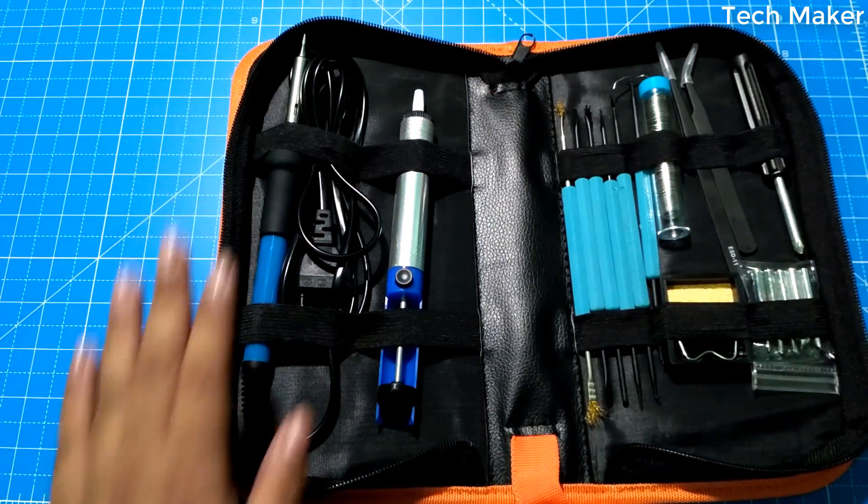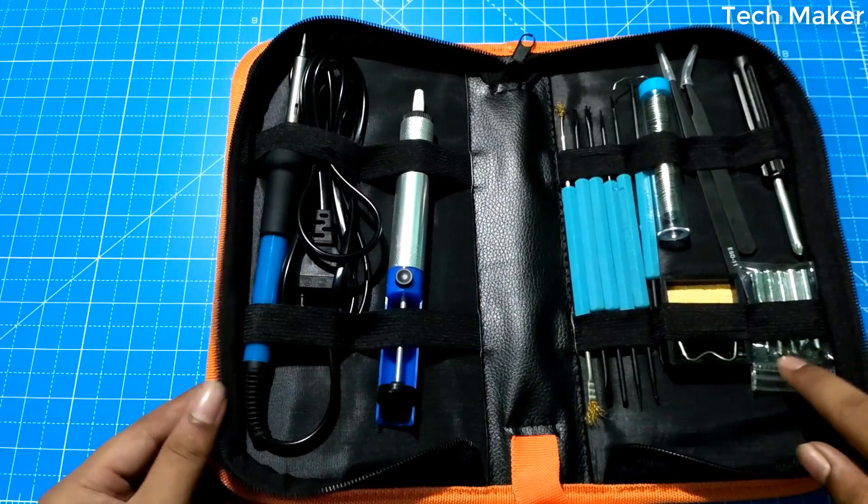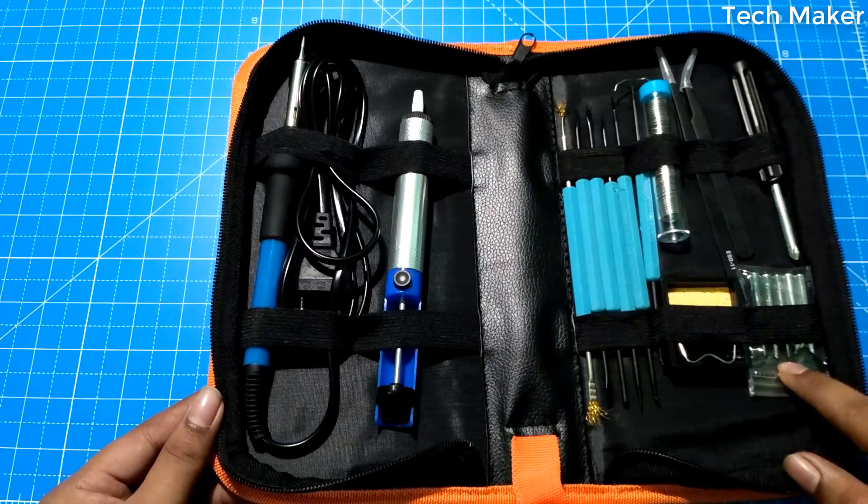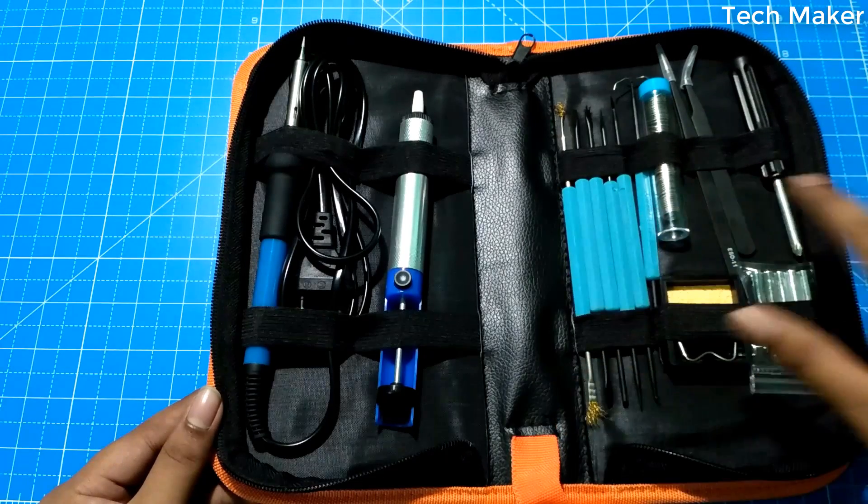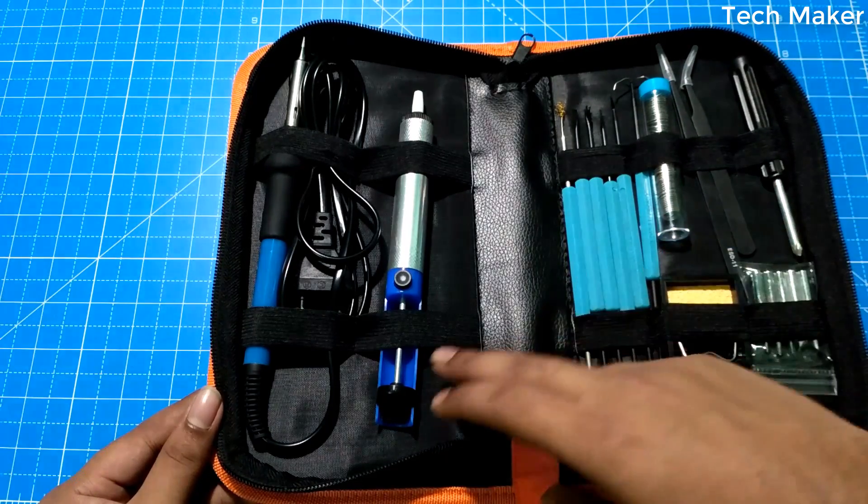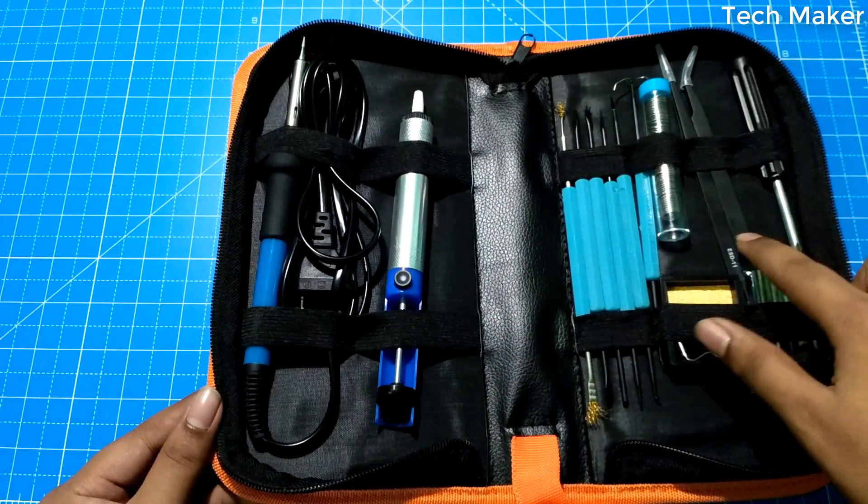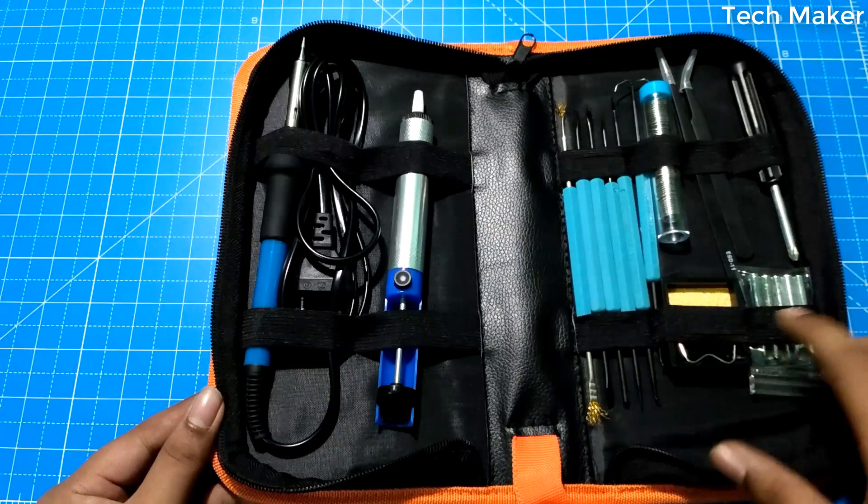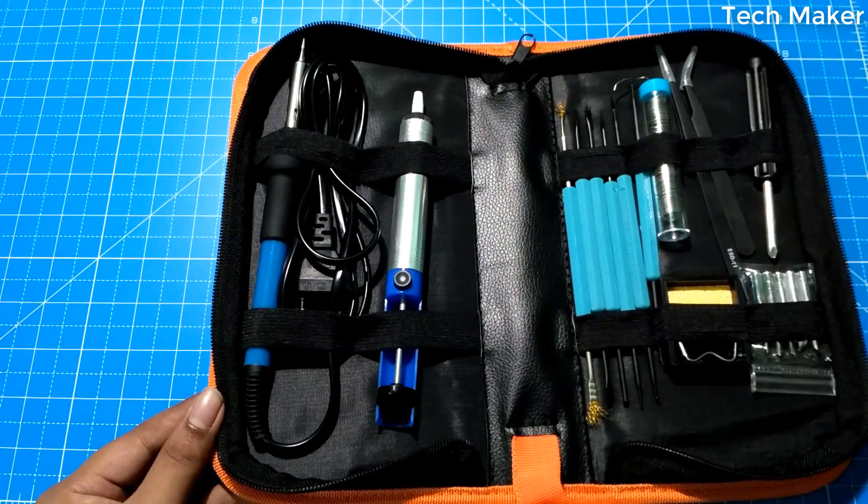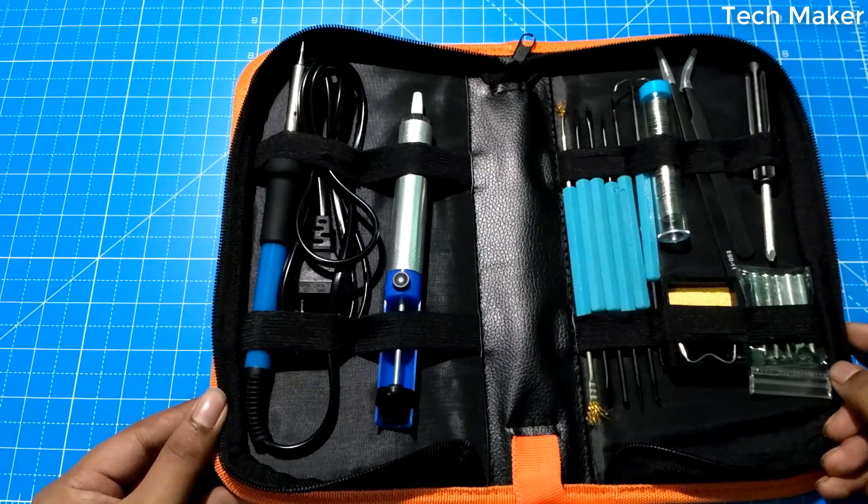Here you will be having one soldering iron and six soldering tips and five soldering tools and one brush and one desoldering pump, one soldering tube, two anti-static tweezers, one stand and this double-headed screwdriver and this leather bag.